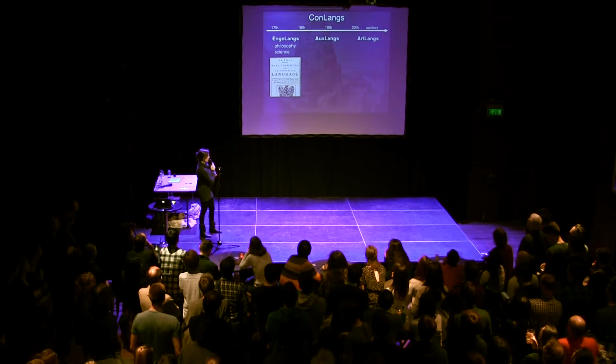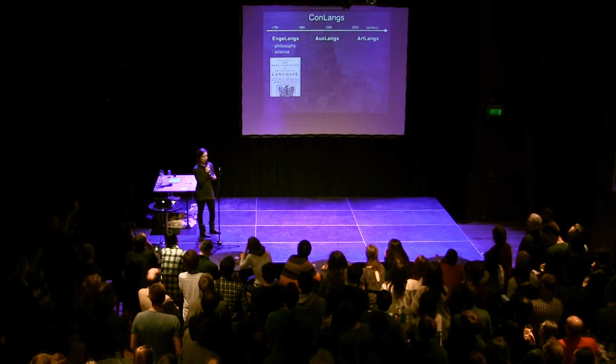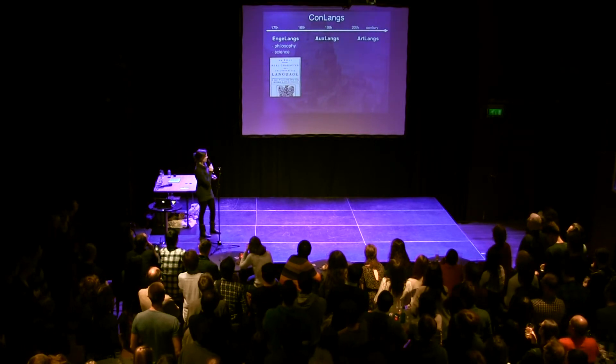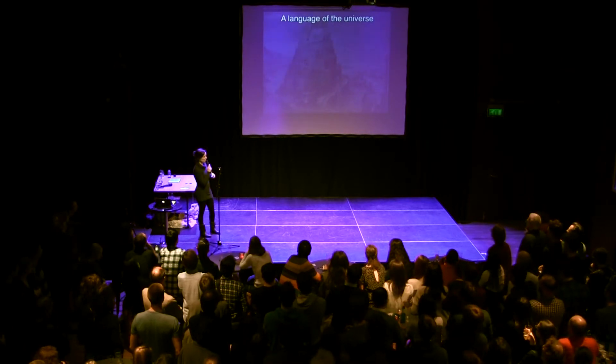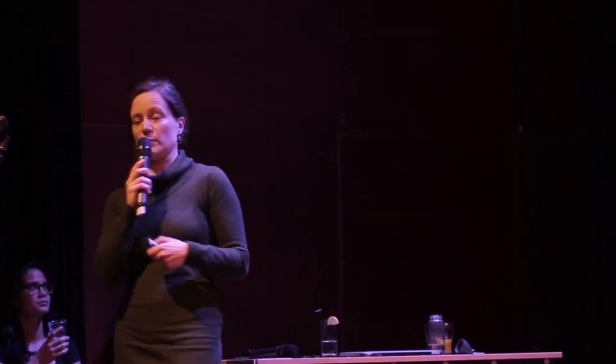The first example I will tell you about is not really very modest — it's a language of the universe. It's a language that really represents the universe as it is. So when you speak it, you will really know what you're talking about. It will be the truth about the universe. The guy who invented this language, John Wilkins, in the 17th century, thought about it like this.